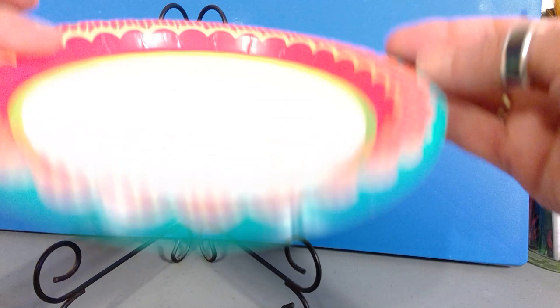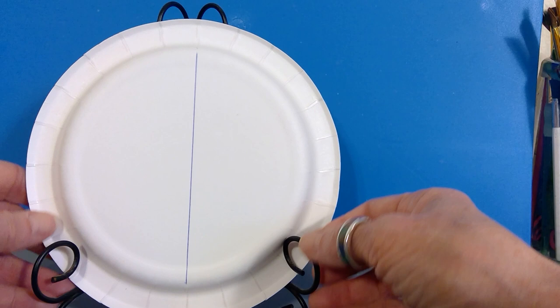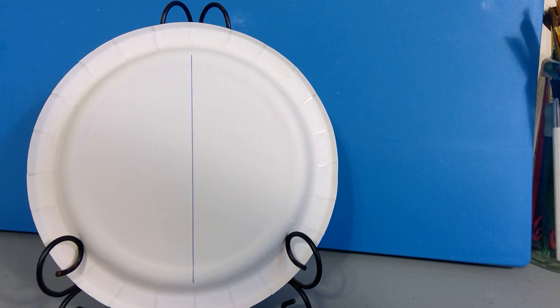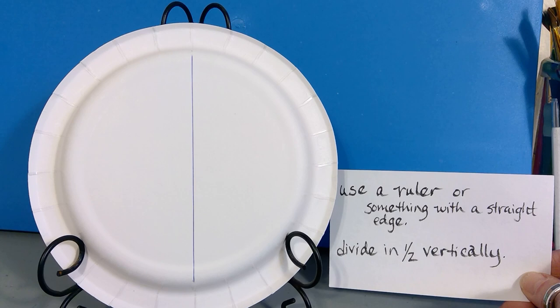It's a little awkward at first, but I got the hang of it. Your first job, first step is to use a ruler or something with a straight edge and divide this circle in half, vertically.